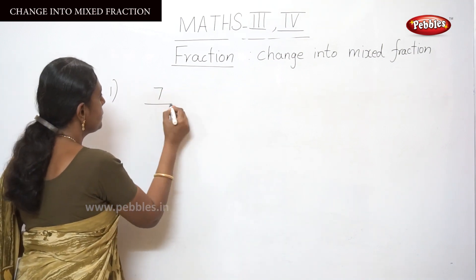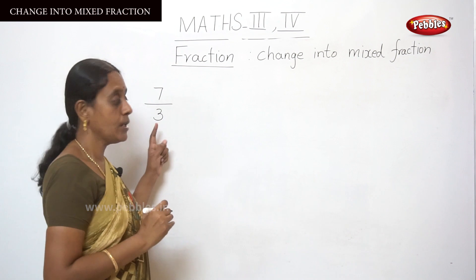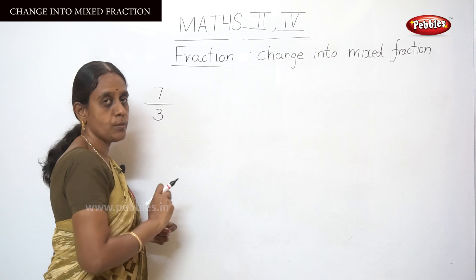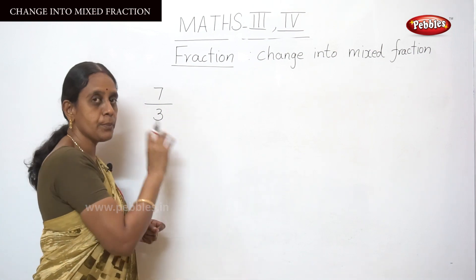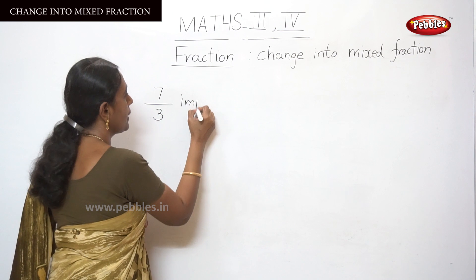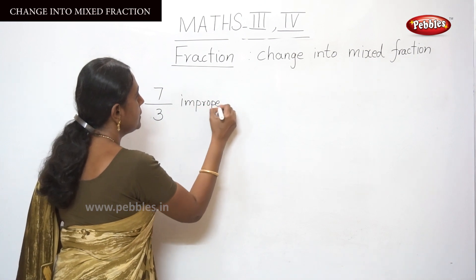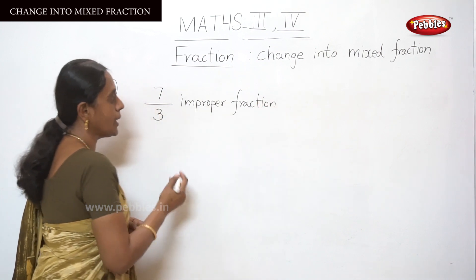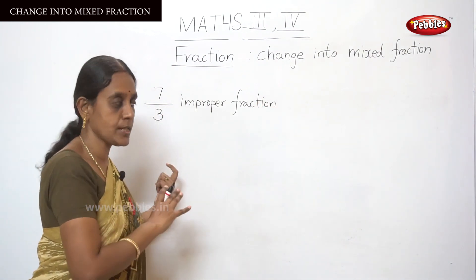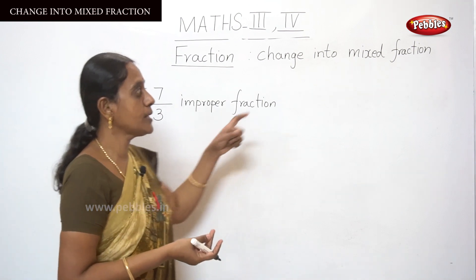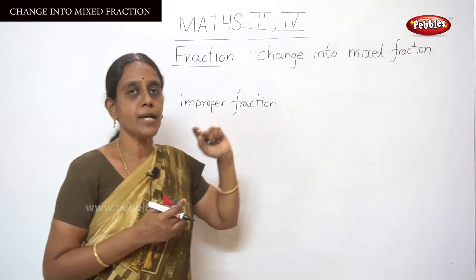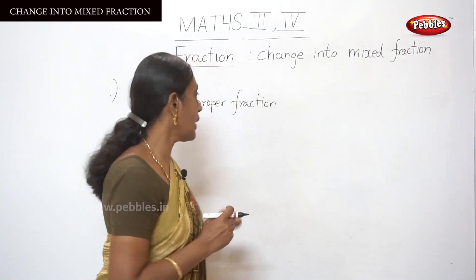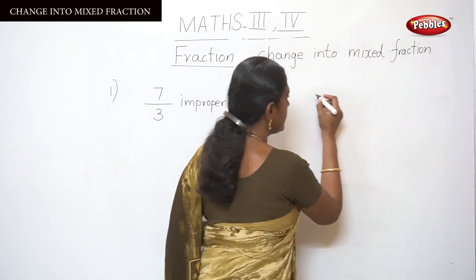Here the question will be 7 by 3. The denominator is smaller than the numerator, so this is called an improper fraction. Now we are going to change this improper fraction into a mixed fraction. A mixed fraction means a combination of a whole number and a proper fraction. Let me do 7 by 3.